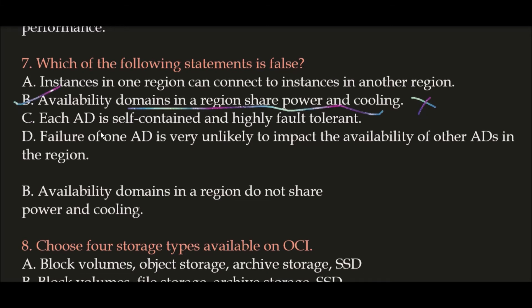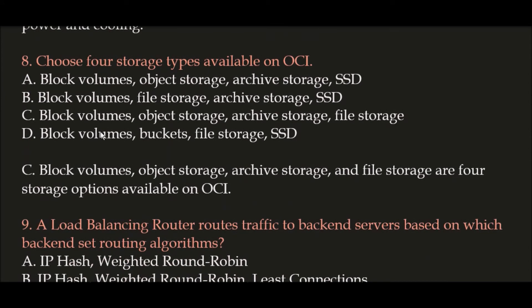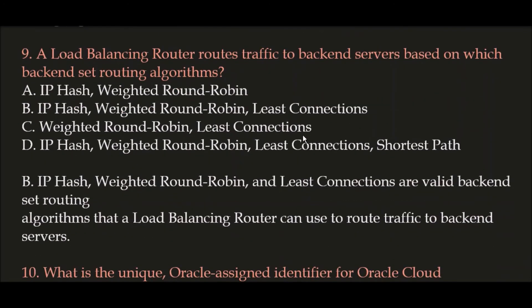Question 8: Choose the four storage types available on OCI. The correct answer is Option C. The four storage types available on Oracle Cloud Infrastructure are: first, Block Volumes; second, Object Storage; third, Archive Storage; and fourth, File Storage.